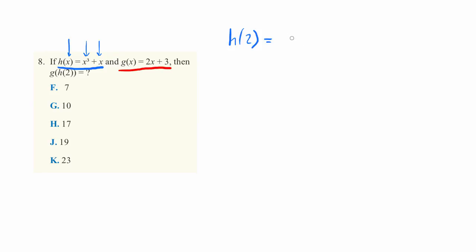So here, h(2) is equal to—instead of x—it's 2³ + 2. And if we solve that through, that's equal to 8 + 2 = 10. And it's nice that we have that,